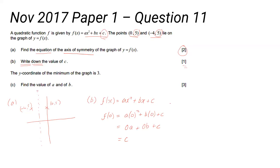Part c is where it gets a little bit tricky. The y-coordinate of the minimum point of the graph is 3. Find the values of a and b. Well, there's two things you can do here.